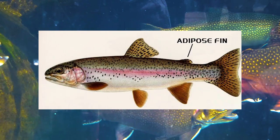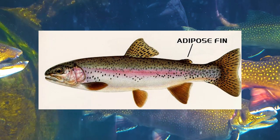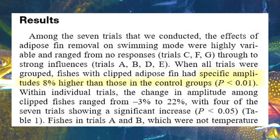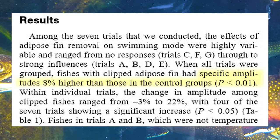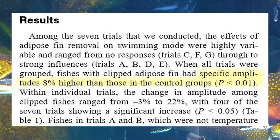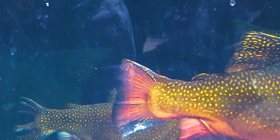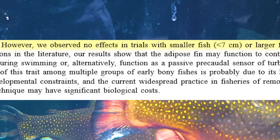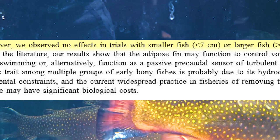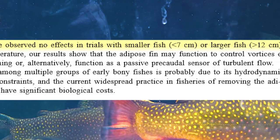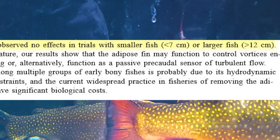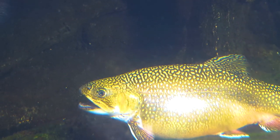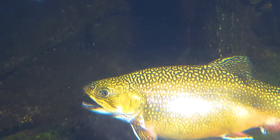The results showed that removal of the adipose fin across seven independent trials on rainbow trout smolt produced an average 8% increase in caudal fin — or tail fin — amplitude relative to unclipped fish across all flow velocities. This shows that the caudal fin was worked more on fish without adipose fins. However, no adverse effects were observed in trials with smaller fish less than 7 centimeters or larger fish greater than 12 centimeters, possibly because the adipose fin is too small in fish under 7 centimeters and insignificant to fish over 12 centimeters with larger, more developed caudal fins.